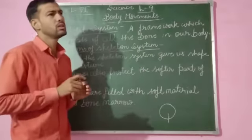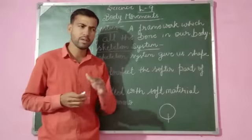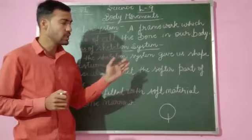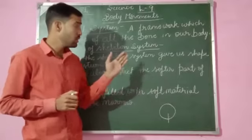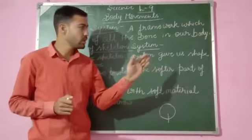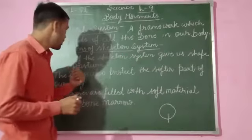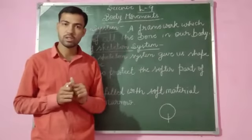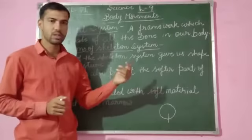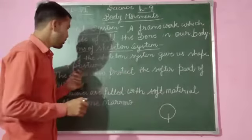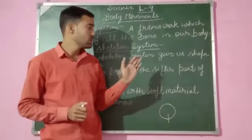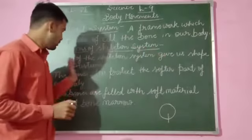You can see the different types of human bodies — different humans have different shapes and different proportions. So the bones of the skeletal system give us our shape and proportions.